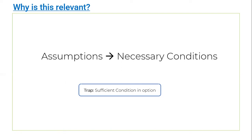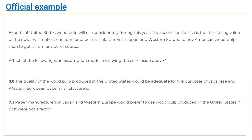All right, here's the first question. This is actually an official GMAT question — I have removed three of the options so you won't get distracted. I want you to first read the stimulus and then select one of these two choices. You can understand that one of them is a sufficient choice and the other is a necessary assumption. For this first question, I purely want you to be able to differentiate between what could be a necessary condition and what could be a sufficient condition. Pause the screen, take a screenshot.